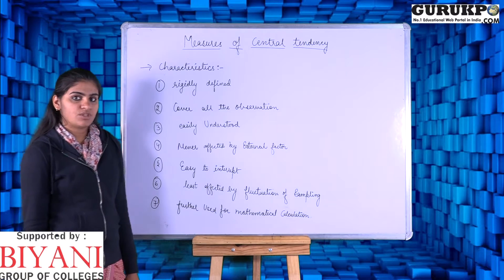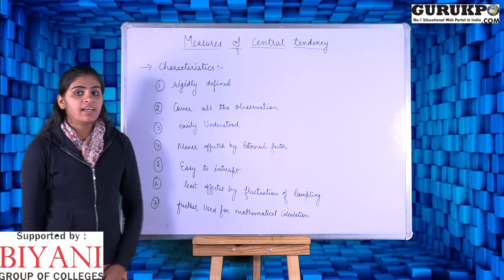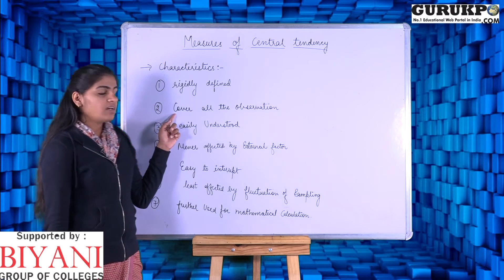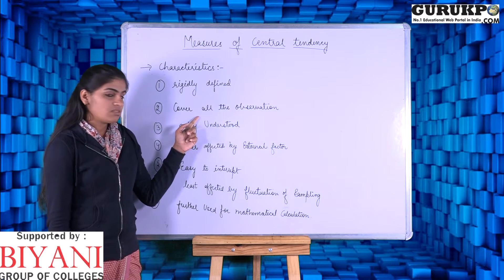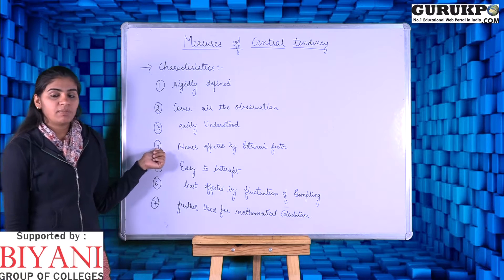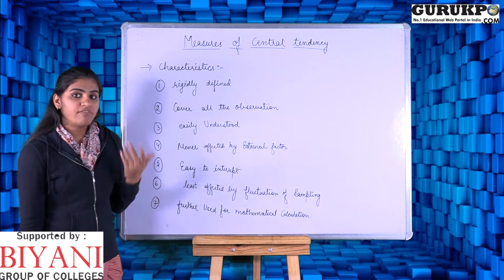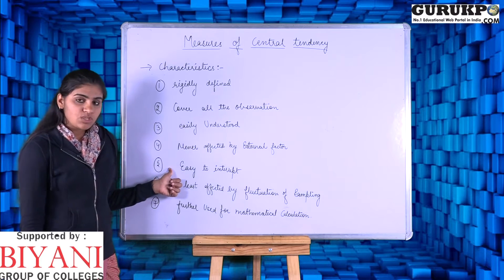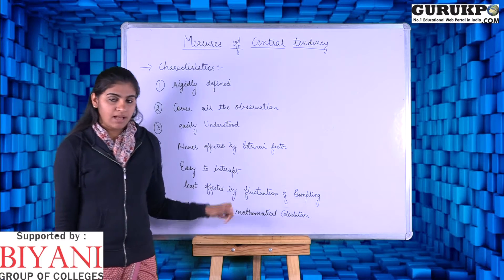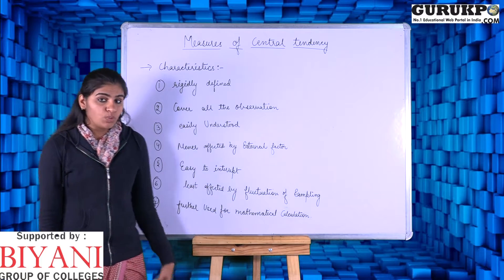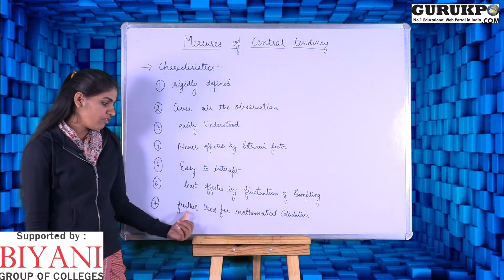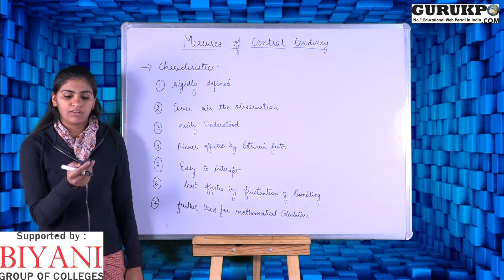There are various characteristics of central tendency: it should be reasonably defined, it should cover all the observations, it should be easily understood, it should not be affected by external factors, it is easy to interpret, it is least affected by the fluctuation of sampling, and it is easy to use for mathematical calculations.